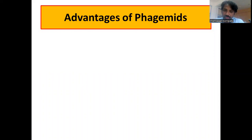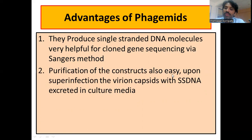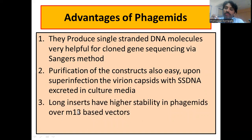The advantages of phasmids: first, cloned phasmids produce single-strand DNA molecules via the F1 origin of replication, which can be used for DNA sequencing via Sanger's method. Purification of constructs is also easy because single-strand DNA constructs are released into the media. Upon super-infection, virion capsids with single-strand DNA are excreted into the culture media. Phasmids can also accommodate longer inserts and have higher stability compared to M13-based vectors.